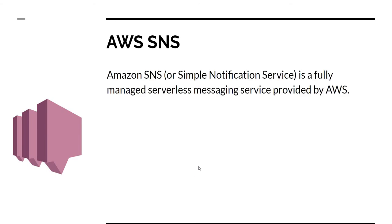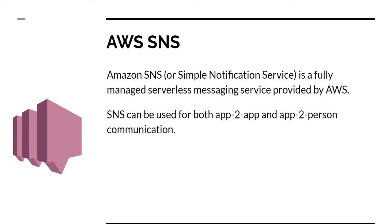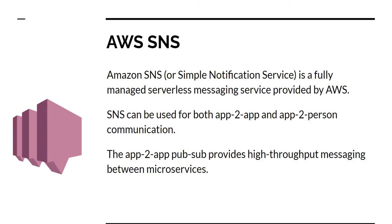AWS SNS, or Simple Notification Service, is another fully managed serverless messaging service provided by AWS. SNS can be used both for application-to-application as well as application-to-person communication. The application-to-application publish-subscribe provides high throughput messaging between distributed systems like microservices.